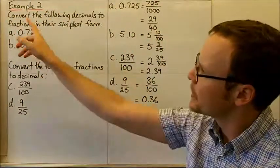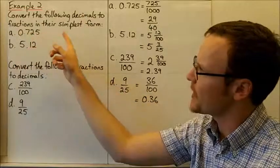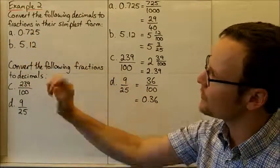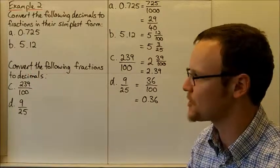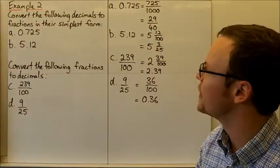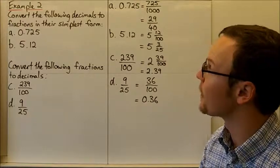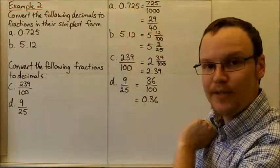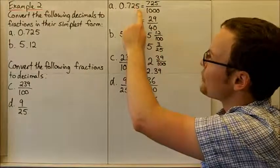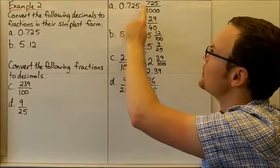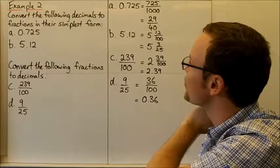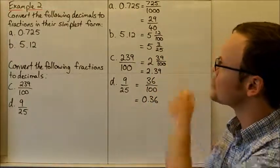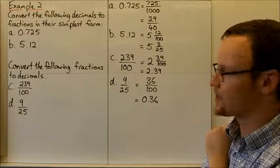For example two, convert the following decimals to fractions in their simplest form. We've got 0.725 — that's 725 thousandths because the 5 is in the thousandths column. So 725 over 1,000, which we can reduce down to 29 over 40.